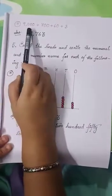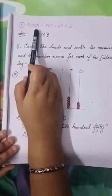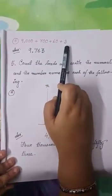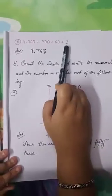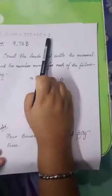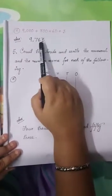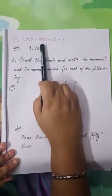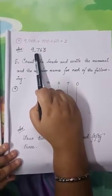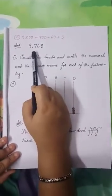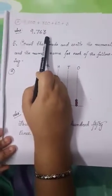Now let's see question number E. It is 9000 plus 700 plus 60 plus 3. The value of 3 is 3, so I have written 3 in the 1's place. 60 goes in the 10's place, 700 in the 100's place, and 9000 in the 1000's place. So our numeral comes as 9763. In this way, question number 4 can be completed by you at your home.